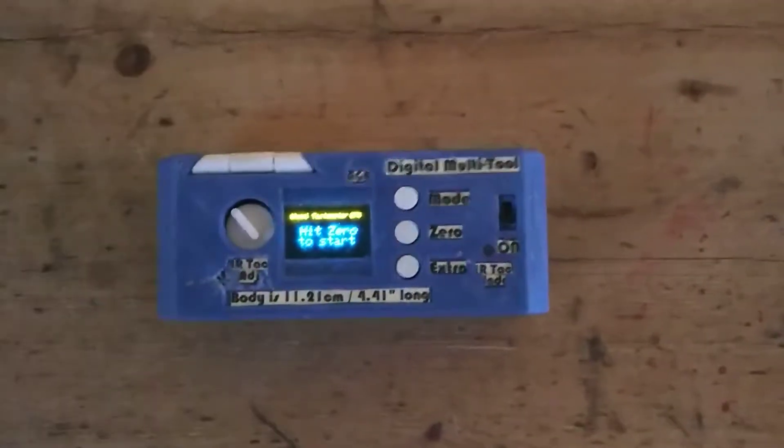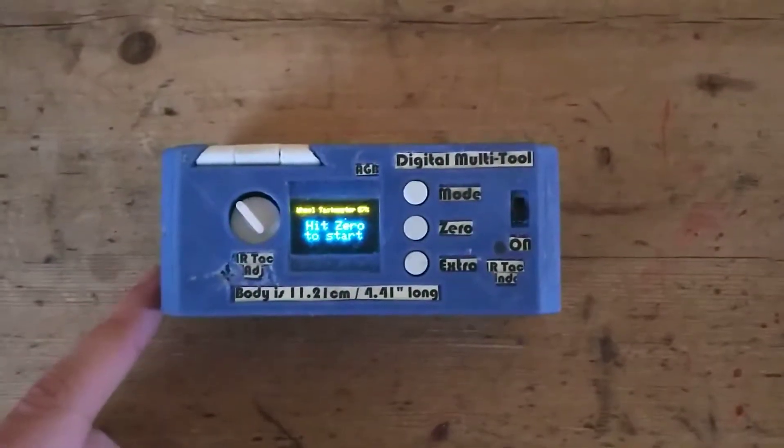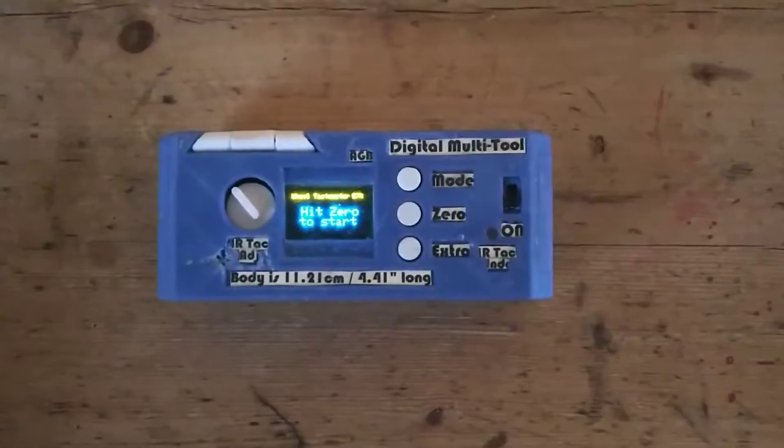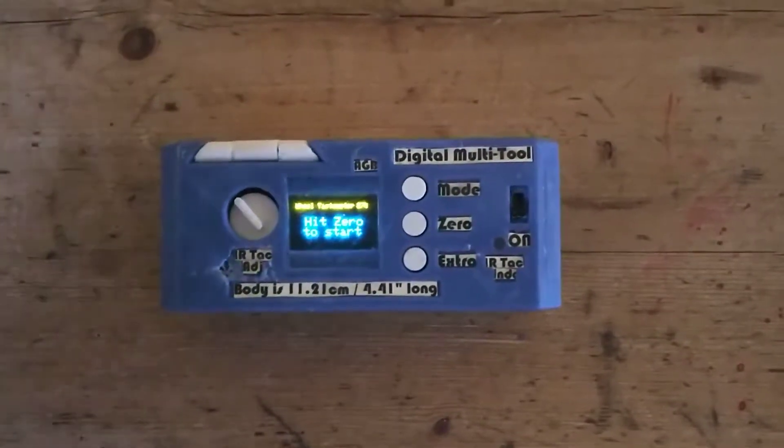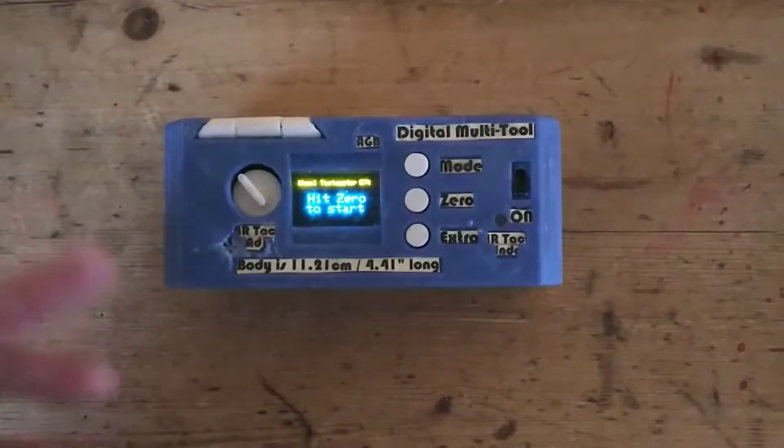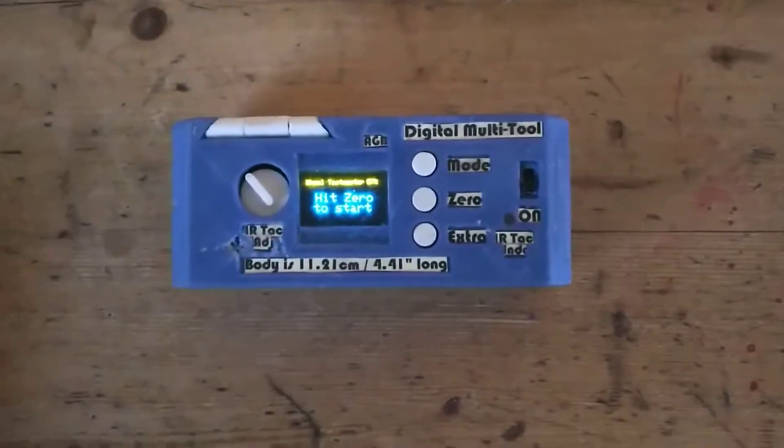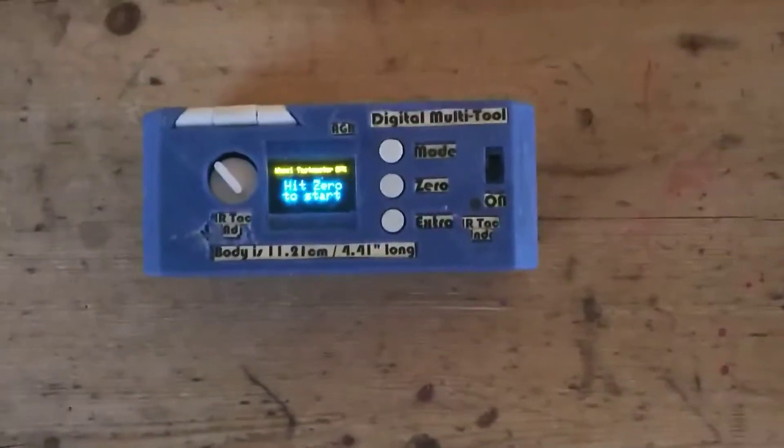Next we have a tachometer which reads RPM, it also uses this wheel on the side. So once you hit go it will start reading whatever rotating object you have and then once you stop it will give you an RPM reading.